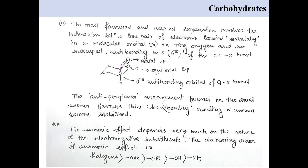which involves the interaction between a lone pair of electrons located axially in the molecular orbital on ring oxygen and an unoccupied anti-bonding molecular orbital of C1-X bond. The anti-periplanar arrangement found in the axial anomer favors this backbonding, resulting in the alpha-anomer becoming more stable.